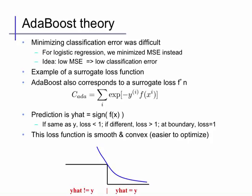A few things about this algorithm might seem mysterious, like why that choice of alpha or those particular weight updates, but although I'm not going to go into many details, it has a nice theoretical justification. It turns out that AdaBoost corresponds to minimizing a surrogate loss function called the exponential loss: the sum over data points of e^(-y * f(x)), where f(x) is our prediction function. If y and f(x) have the same sign, this is small; if they have a different sign, it grows. So this is a smooth, convex surrogate for the zero-one loss and thus fairly easier to optimize. It turns out this AdaBoost procedure is iteratively minimizing this exponential loss.